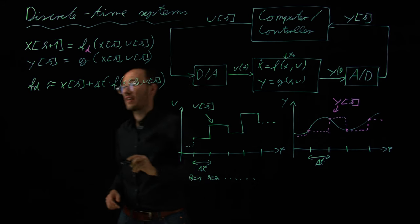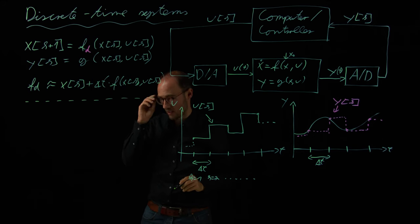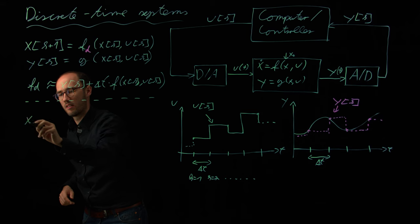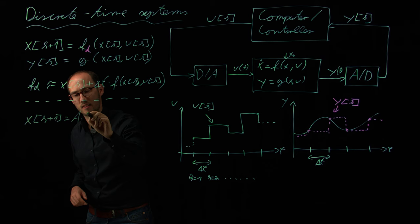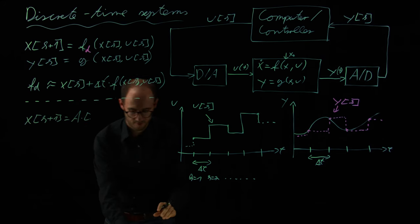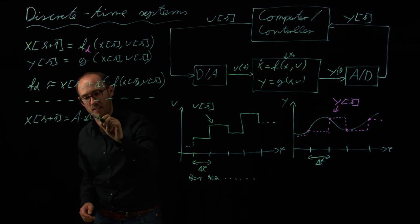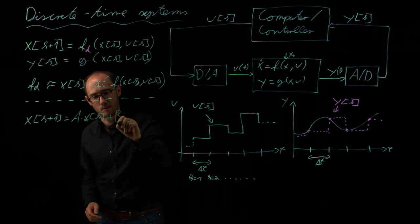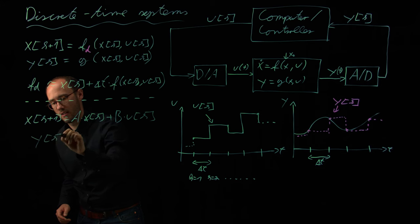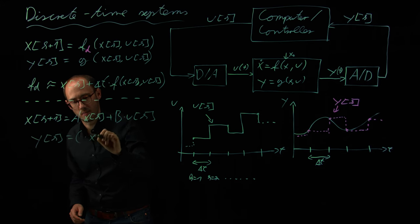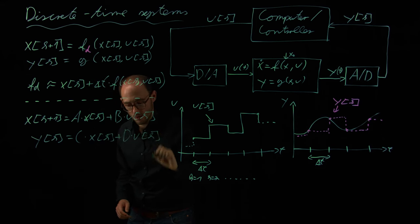In the linear case, so this was nonlinear, but we can also simplify this to the linear case. It looks similar but different. So it becomes x[k+1] is equal to A times x[k] plus B times u[k], and the output would be y[k] = C times x[k] plus D times u[k].